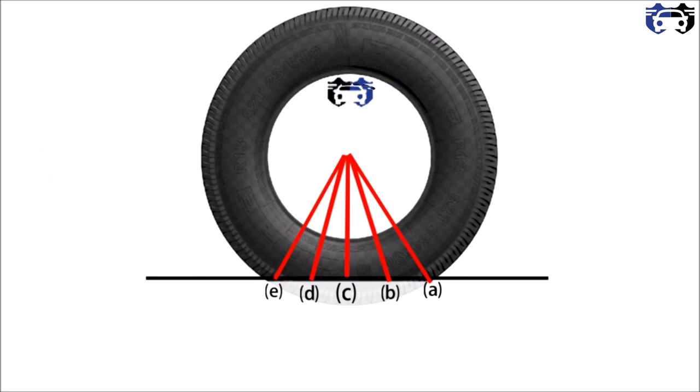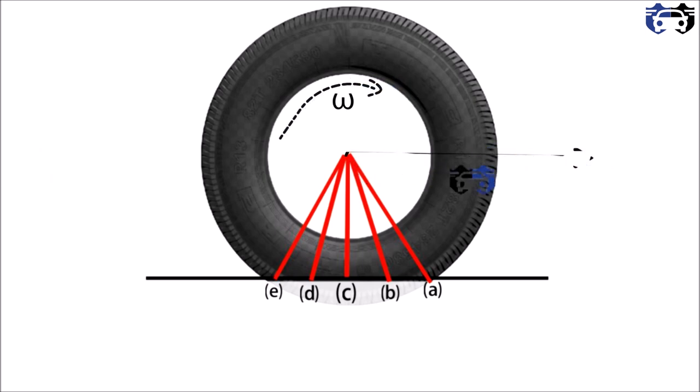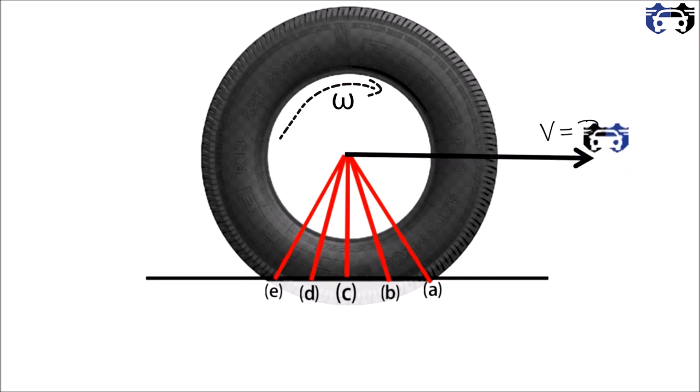This is a loaded tire rotating clockwise with an angular velocity omega and moving forward with velocity v, where v equals rw multiplied by omega, and rw is the effective or rolling radius of the tire.